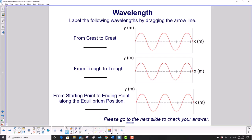Label the following wavelengths by dragging the arrow line. If you're using this on smart notebook, you can do that. If not, just watch what I'm doing. So crest to crest would be like that, or it could also be like that. Trough to trough. Let's see if I can pick that up. There we go. And that's the only place where you have trough to trough.